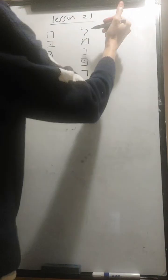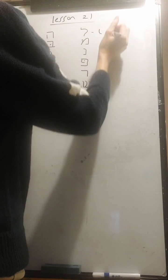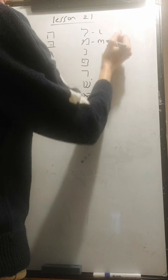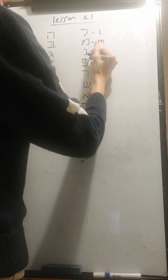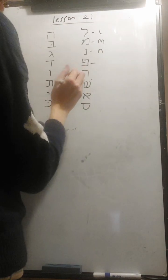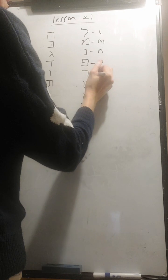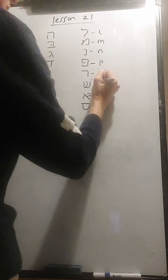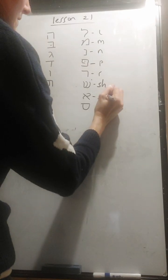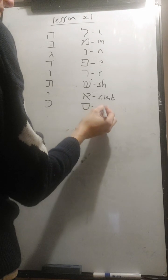So we're keeping going over them. Start with the lamed, sounds L. The mem sounds M. The nun sounds N. Peh sounds P. Resh sounds R. Sin sounds SH. Alef is silent, no sound.